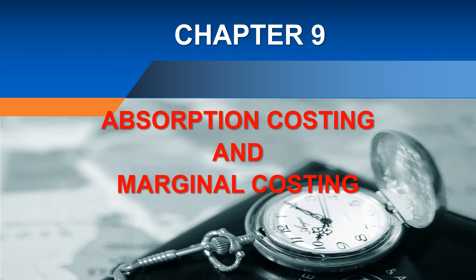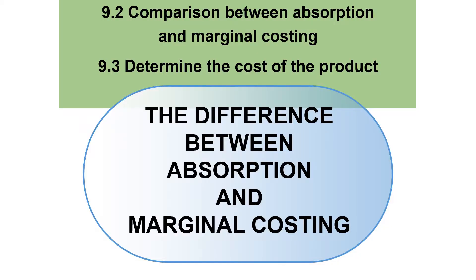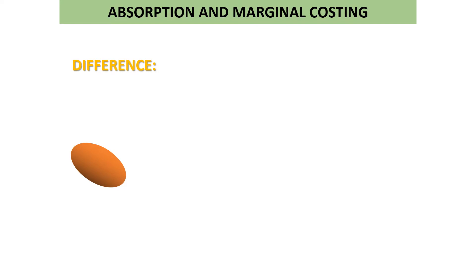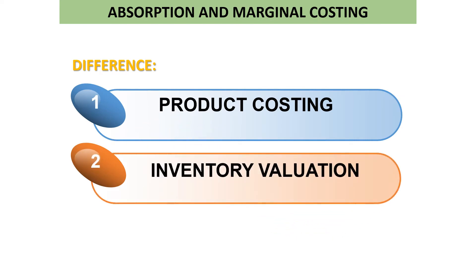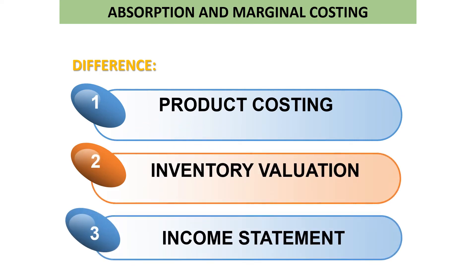Chapter 9: Absorption Costing and Marginal Costing, second part. We are going to look into sections 9.2 and 9.3 — the comparison between absorption and marginal costing, and how to determine the cost of the product. The differences between absorption and marginal costing are based on three areas: product costing, inventory valuation, and the income statement.